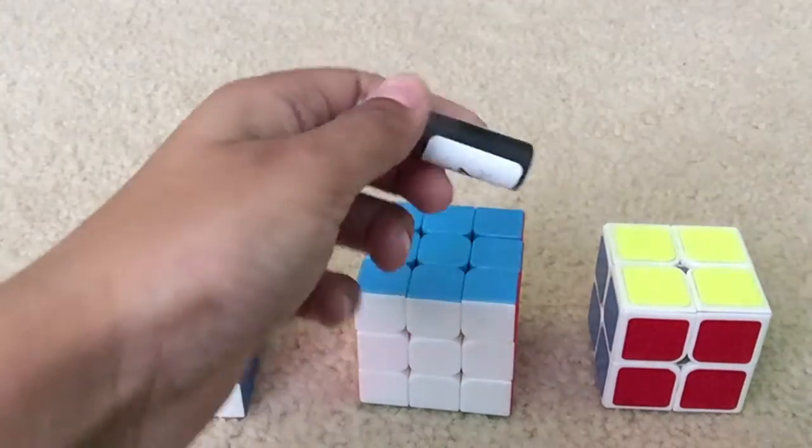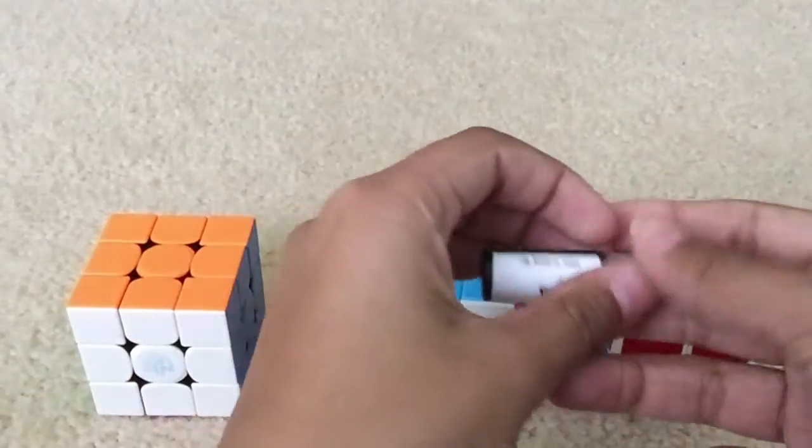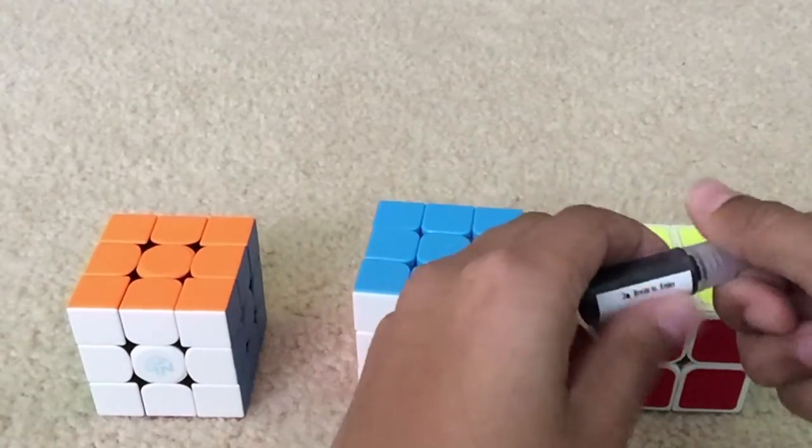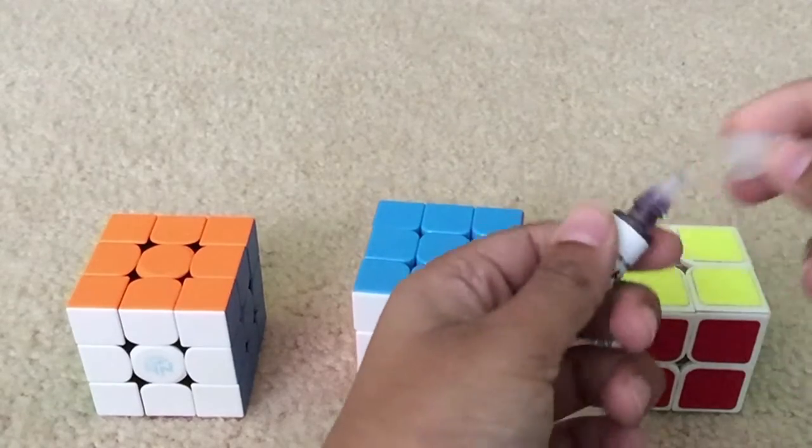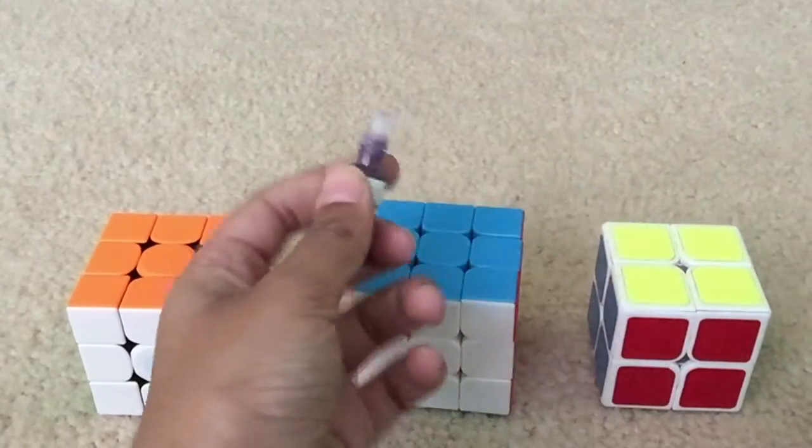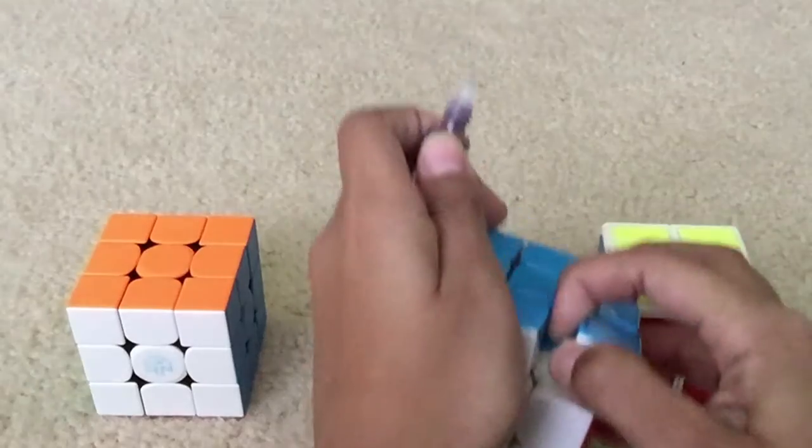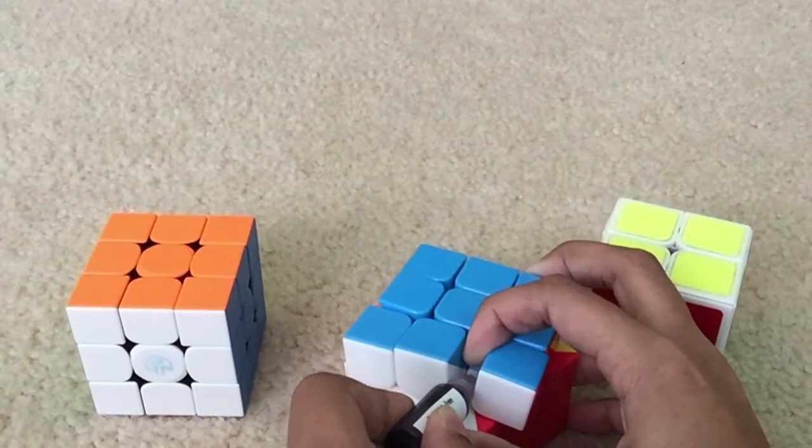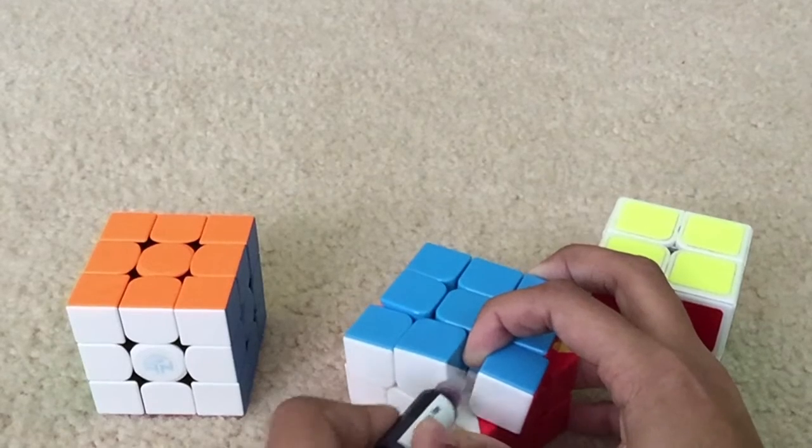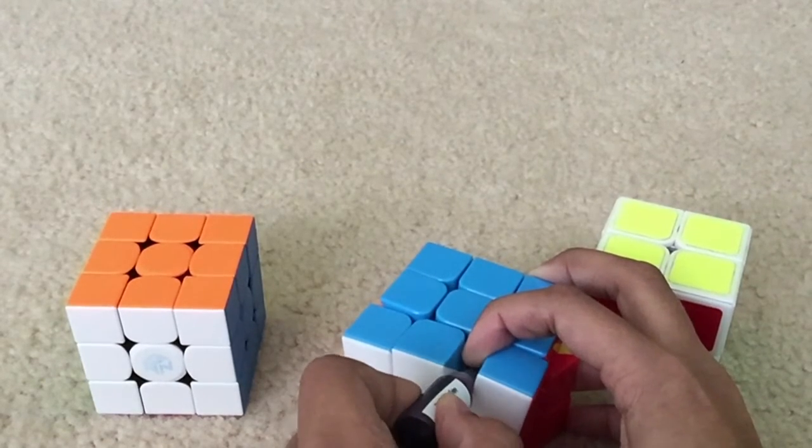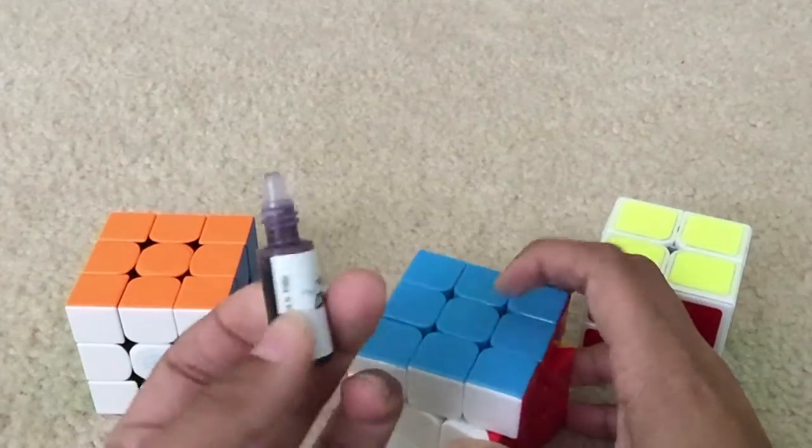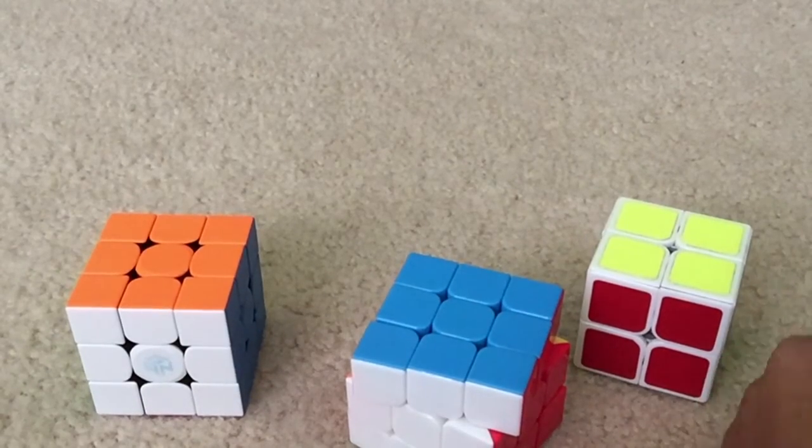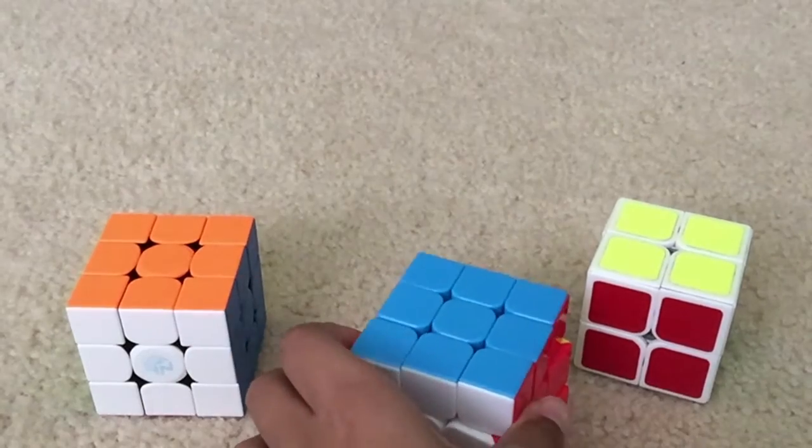On the instructions it says to put 2 drops inside of it, inside the cube and break in and enjoy. So I'm gonna do that first with my 3x3. One, two, so that's good. And now I'm gonna break it in.